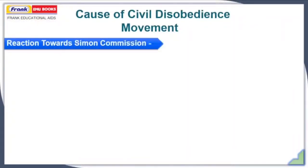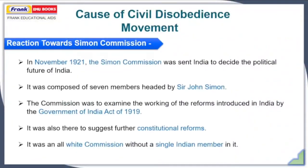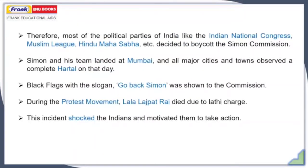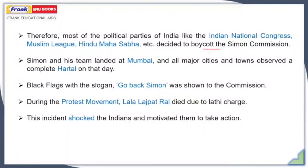Continuing our lecture on national movements between 1919 to 1934, we are now heading towards the causes of the civil disobedience movement. The first cause was the reaction towards the Simon Commission. This commission was sent to India in November 1927 to decide the political future of India. It was a committee of seven members headed by Sir John Simon, formed to examine the working of the reforms introduced by the Government of India Act of 1919, also known as Montagu-Chelmsford Reforms, and to suggest further constitutional reforms. But it was opposed because it was an all-white commission with no Indian member. Most political parties — Indian National Congress, Muslim League, Hindu Mahasabha — decided to boycott the Simon Commission, saying they could not decide India's future without Indian intervention.